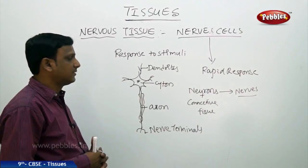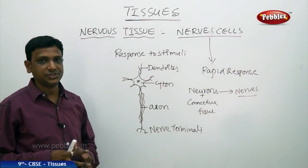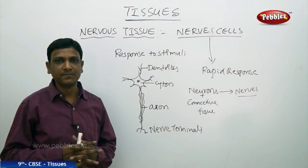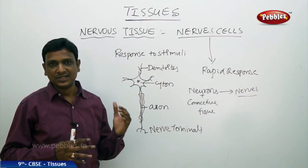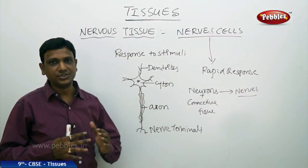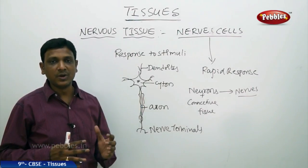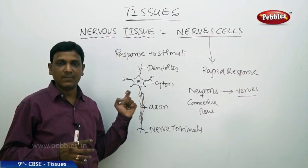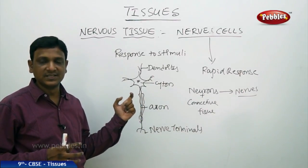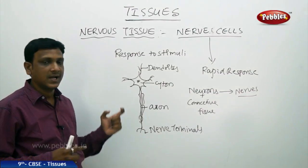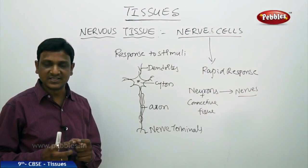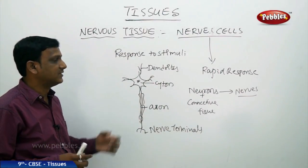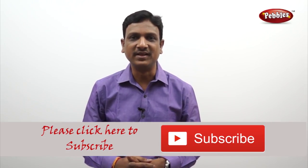Nervous tissue consists of nerve cells that help in communication — passing information within the body between different parts. That covers all animal tissues. In this lesson on tissues, we have learned about plant tissues and animal tissues, building on the previous chapter about cells. You can link up the concepts and, if possible, observe permanent slides of animal tissues like voluntary and involuntary muscles — striated and unstriated — to find similarities and differences in cell shape and identify their functioning.